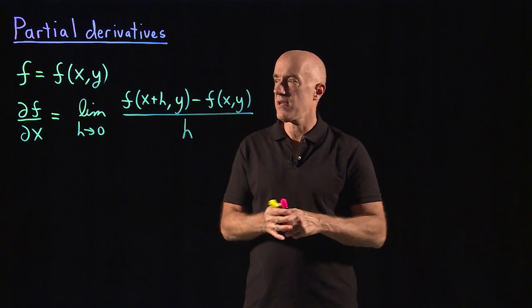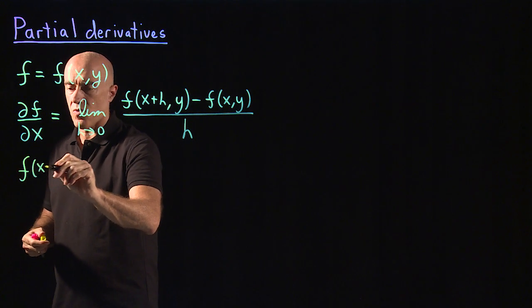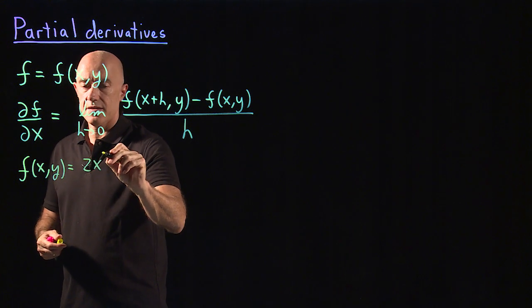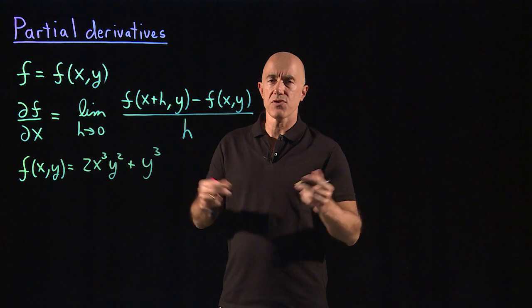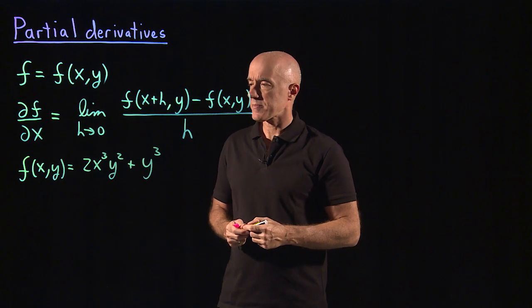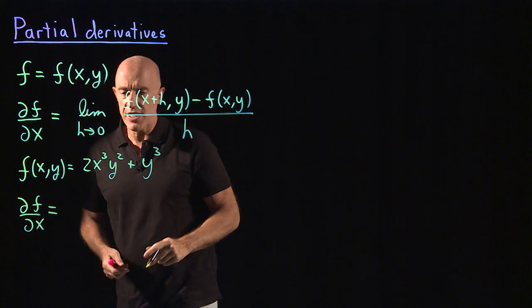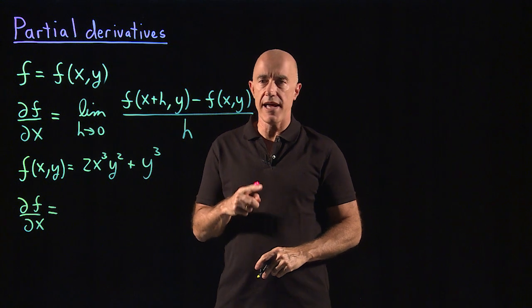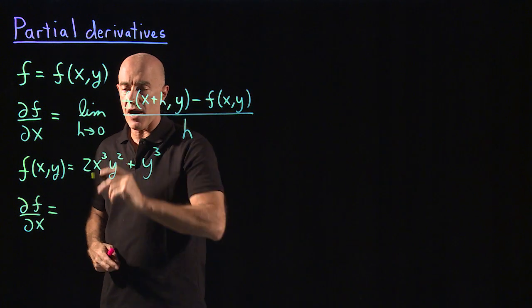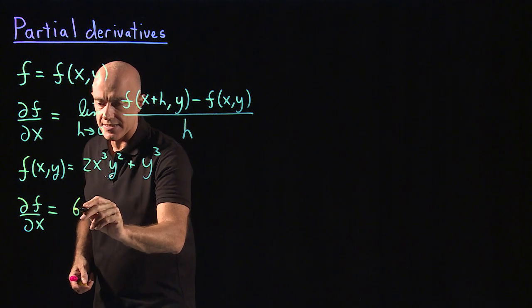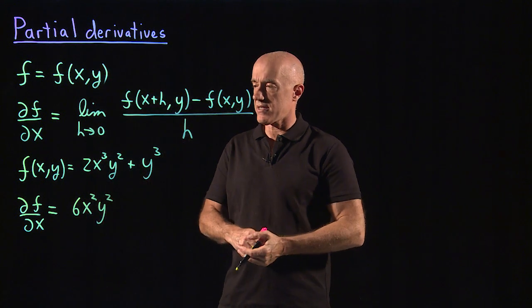That's how you take partial derivatives. Let's look at a simple example. Say f(x, y) = 2x³y² + y³, and find the partial derivatives of this function. What is the partial derivative of f with respect to x? You differentiate with respect to x, holding y fixed. So y is treated like a constant, 2 is a constant, and by the power rule, we bring down the 3. So we get 6x²y². The derivative of y³ with respect to x is 0, because that's like the derivative of a constant.